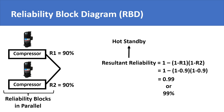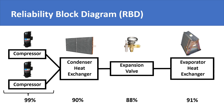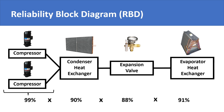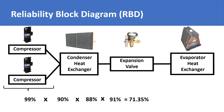There is also another type called cold standby, which we will discuss in a later lecture. For now, what you need to remember is that hot standby is to be taken as the default parallel configuration if the problem statement hasn't stated the type of standby. Once the reliability of parallel components has been calculated separately, we can multiply the reliability of all components just like in simple series configuration to get the overall resultant reliability. In our example, it comes out to be 71.35%.